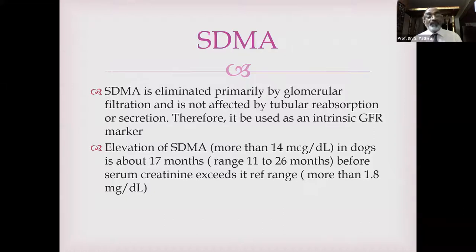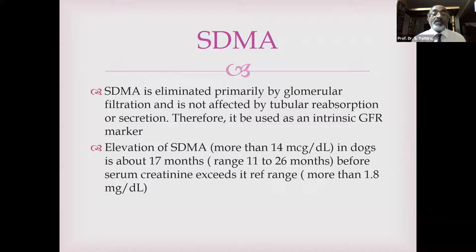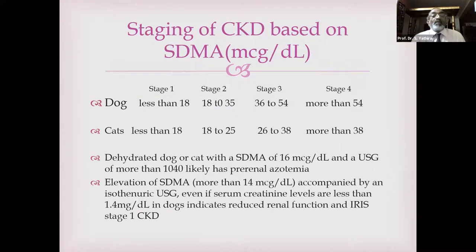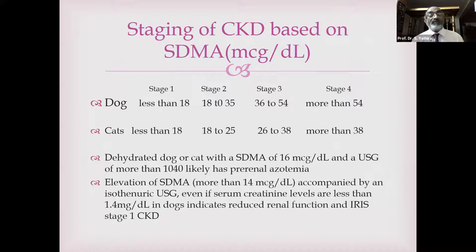An increase in urine output should be apparent 20 to 60 minutes after an IV furosemide dose of 2 to 6 mg/kg. If there is no response to high doses, therapy should be discontinued. If a response does occur, this dose can be administered every 6 to 8 hours. Renal replacement therapy is the treatment of choice for patients that fail to respond to medical management.